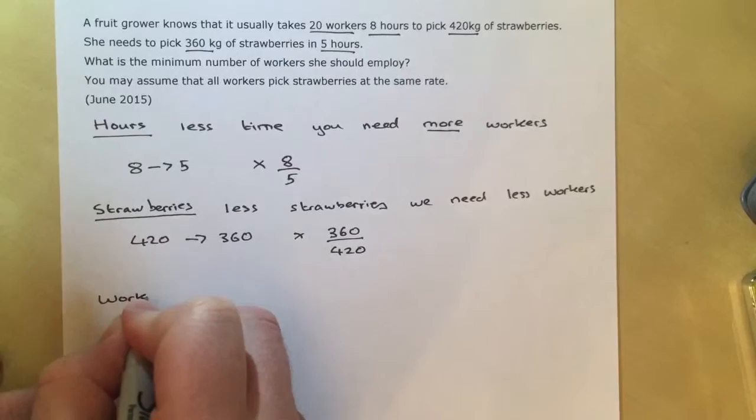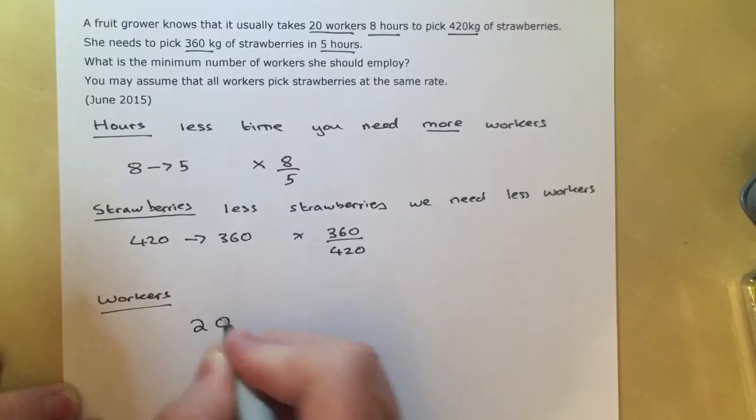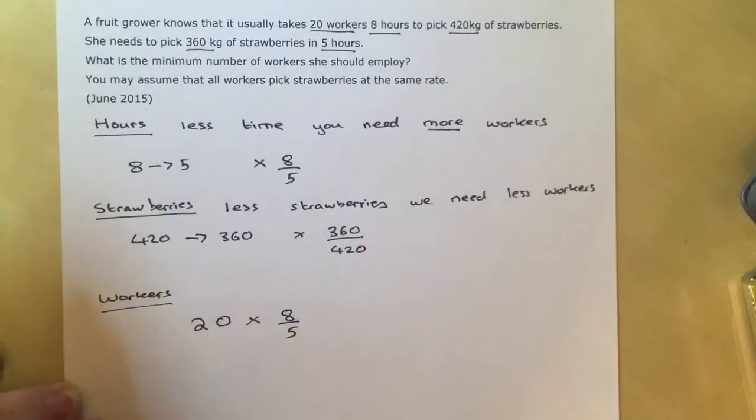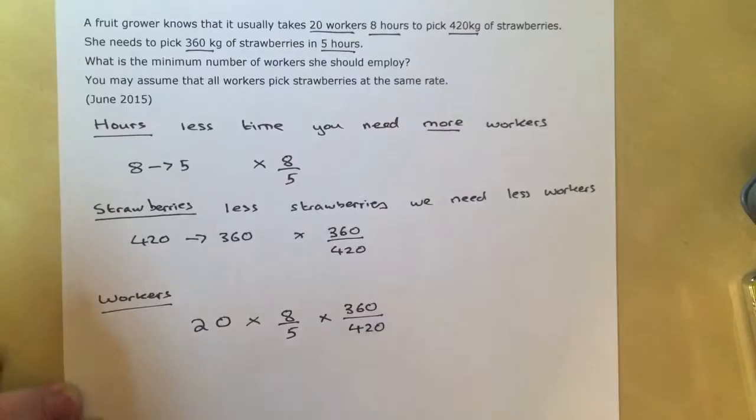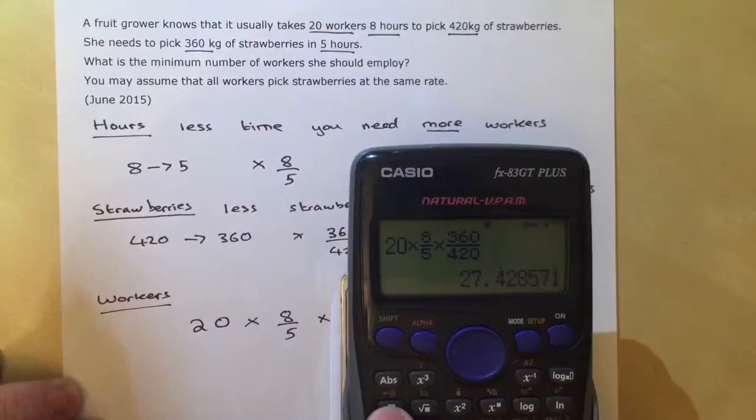Now we're going to look at the number of workers we need. We start with our 20 and we multiply it by these two multipliers: times 8 over 5, multiplied by 360 over 420. Now the best way to do this is use your calculator and use the fraction button here.